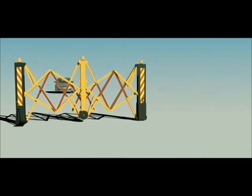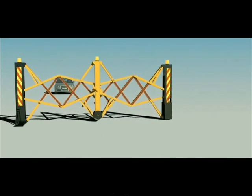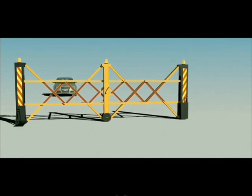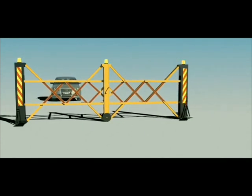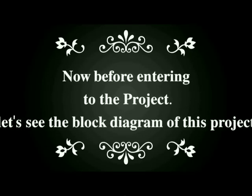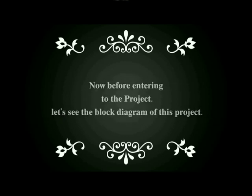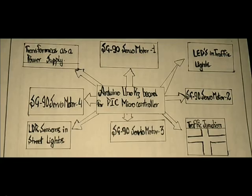To overcome this problem, we have placed automatic barricades before the zebra crossing so that no vehicles can cross the line. Meanwhile, the traffic system is also regulated without any problem.